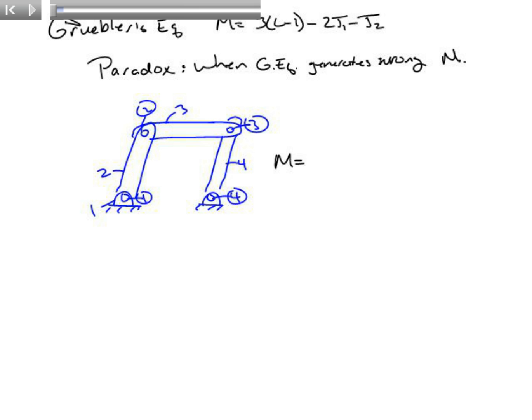If we go back to Grubler's equation for this particular mechanism, we'll find that M is equal to three times (four minus one), minus two times the full joints, which is four, minus zero half joints. For this case with no half joints, four full joints, and four links, we're going to get a degree of freedom of one. And that's great because that is correct.